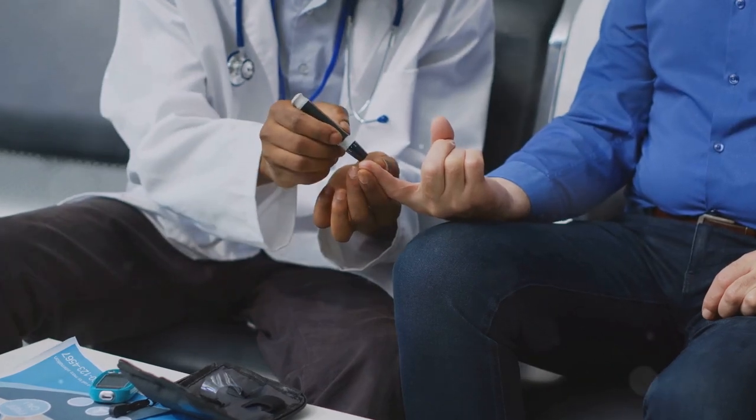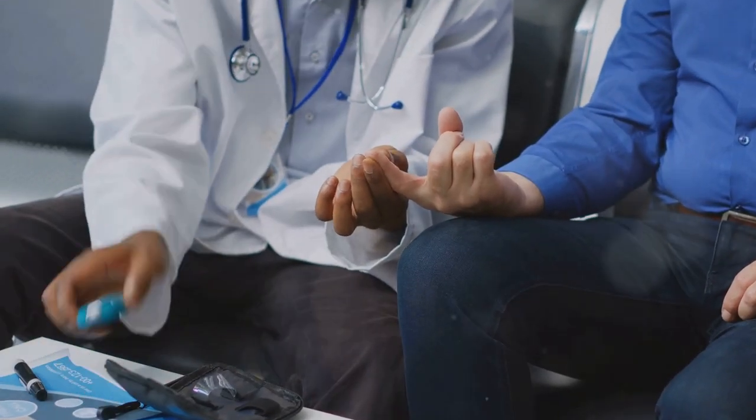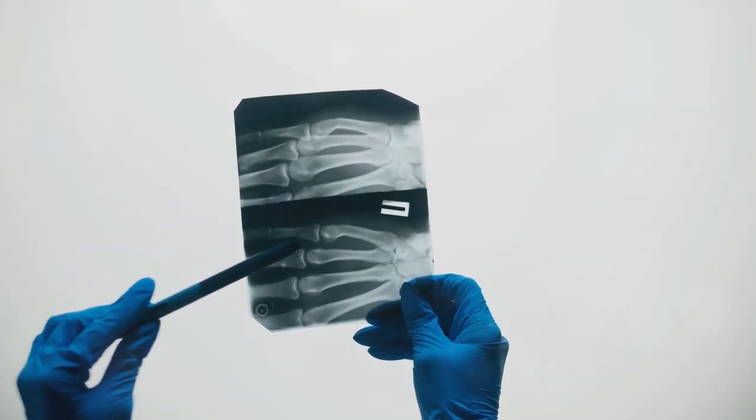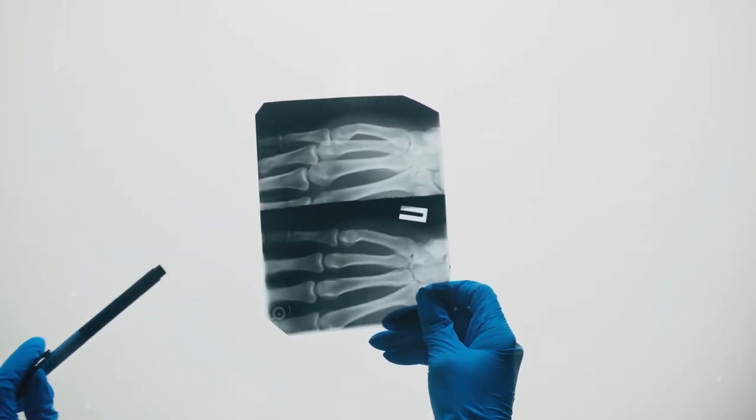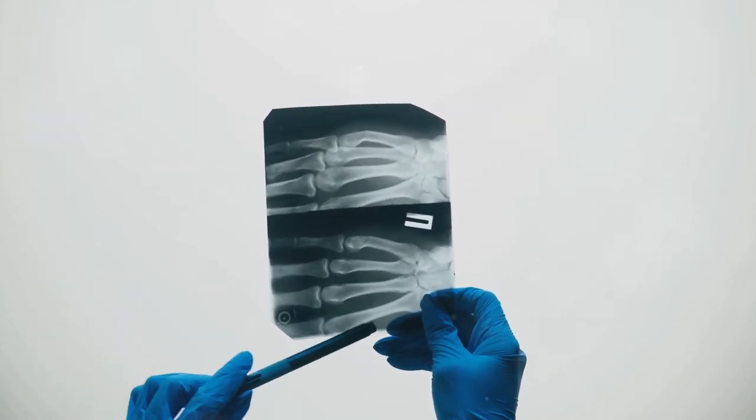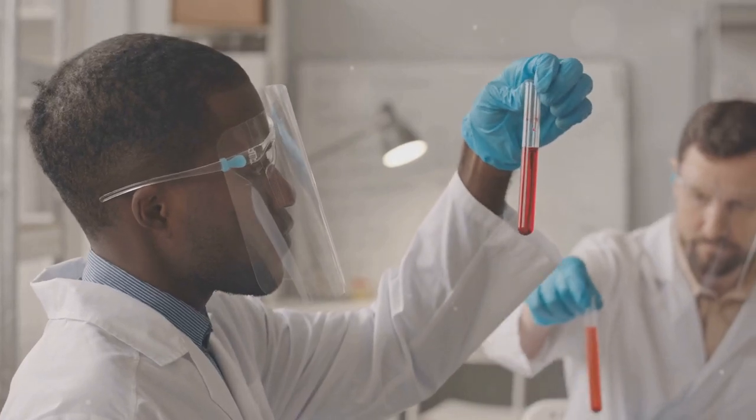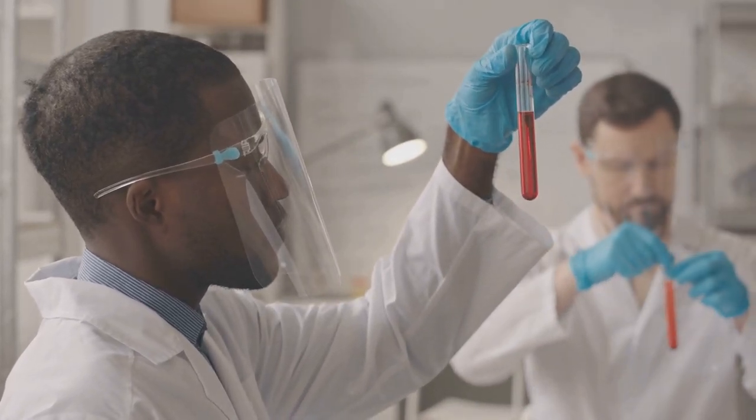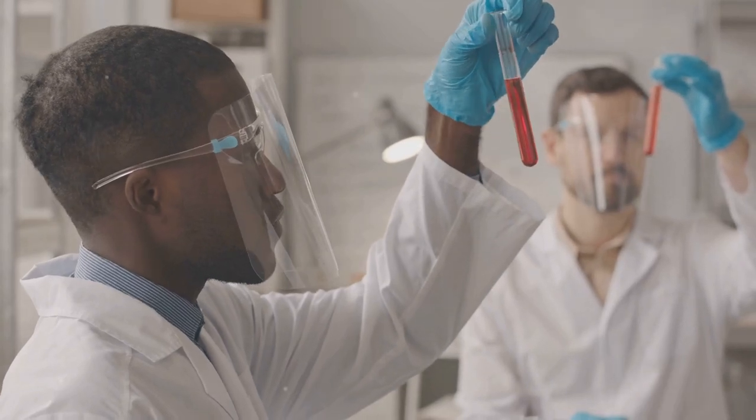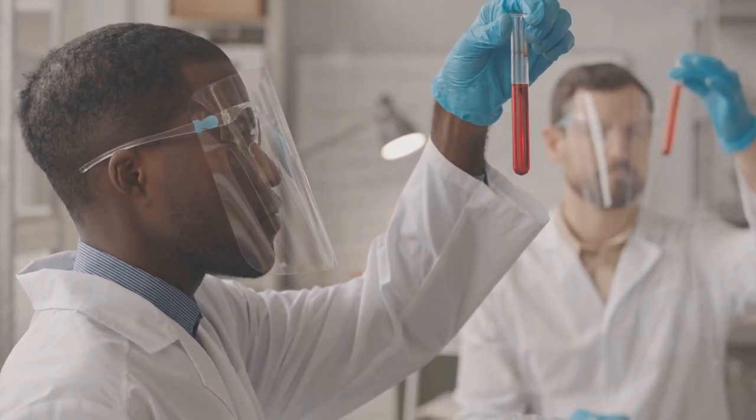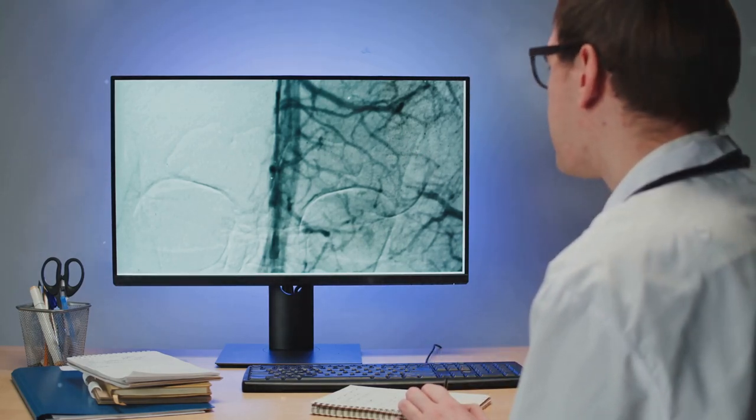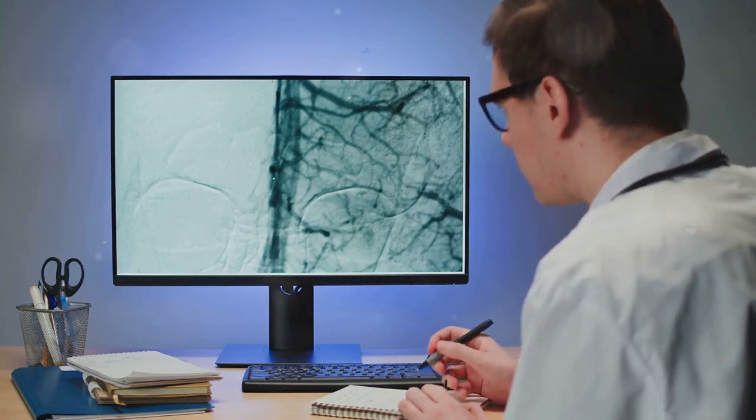However, when XO activity is elevated, it can lead to an overproduction of uric acid. High levels of uric acid can build up in the blood, forming crystals that deposit in joints, causing a painful condition known as gout. More importantly, in the context of hypertension, elevated XO activity has been linked to oxidative stress, a harmful process that damages cells and tissues. This oxidative stress can contribute to the development and progression of cardiovascular diseases, including resistant hypertension.